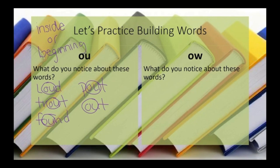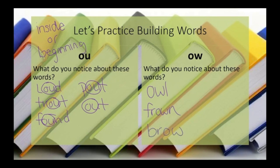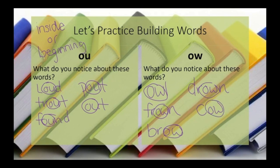With OW making the OW sound, we have the words owl, frown, brow, drown, and cow. In words that have OW, the OW sound can be in any part of the word. So if you hear an OW sound on the inside or at the beginning of a word, it could be either. If it's at the end of the word, it's likely going to be OW.